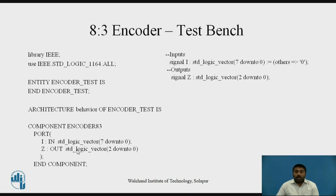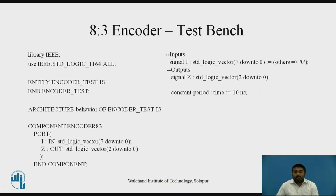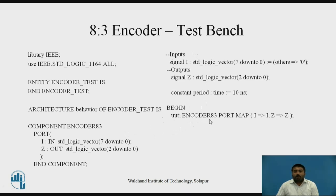Then you mention the inputs and outputs as signals. I is the input signal — type std_logic_vector, range 7 downto 0, an 8-bit input signal. Z is the output signal — type std_logic_vector, 2 downto 0, a 3-bit output signal. We also declare a constant called 'period' of 100 nanoseconds. You can use this constant or directly write 100 ns wherever needed. Then architecture begin — all statements written before the 'begin' keyword form the declarative part.